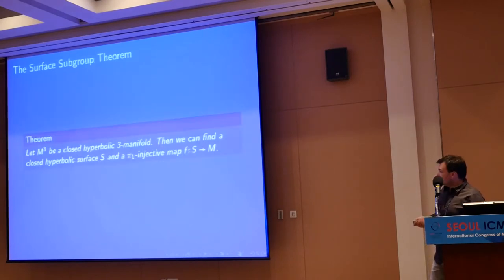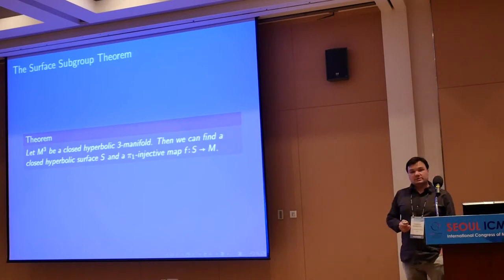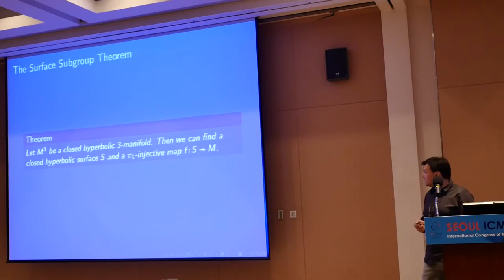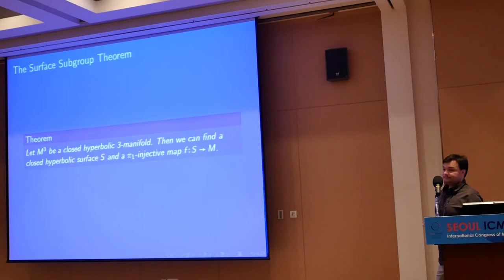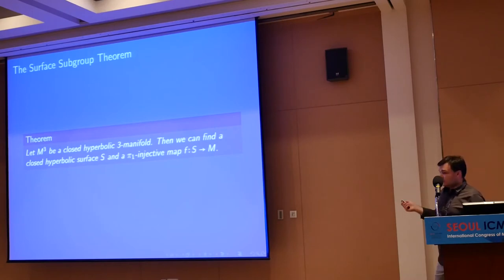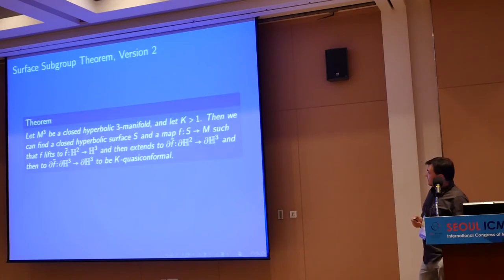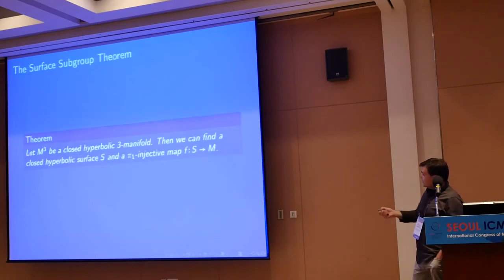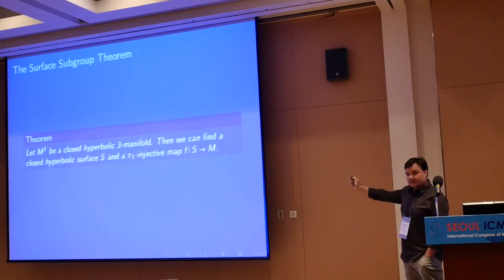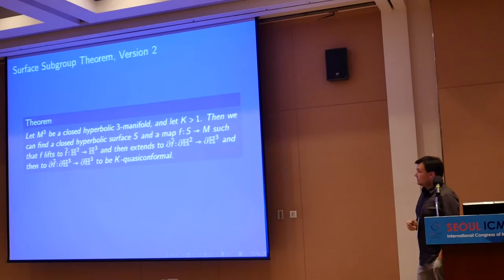Our theorem says exactly this: every closed hyperbolic three-manifold contains a pi-1 injective closed surface — a pi-1 injective map from S to M. That's the statement of the theorem. Let me now give you a more quantitative version of this topological statement.